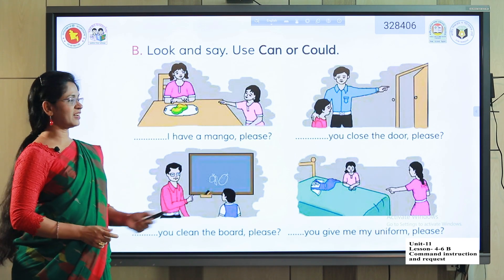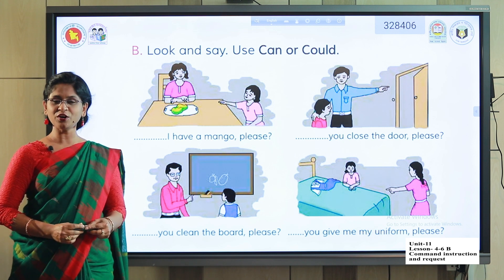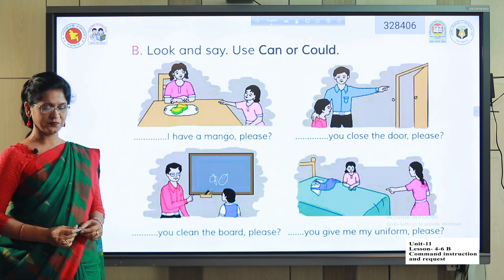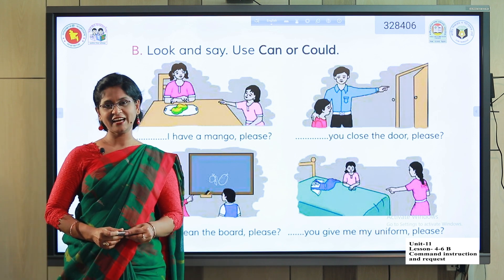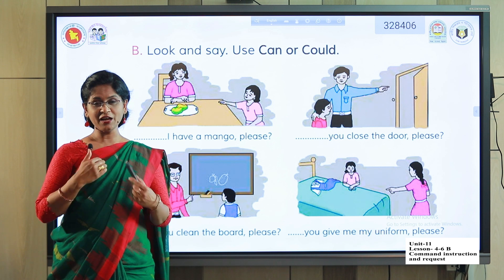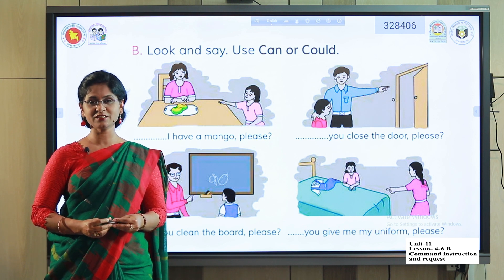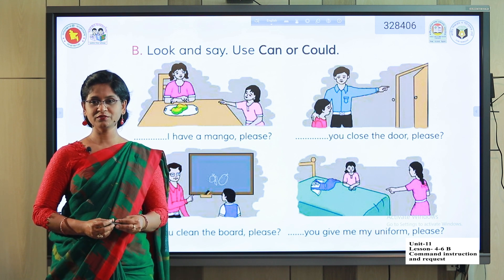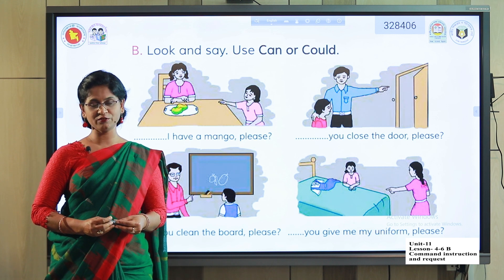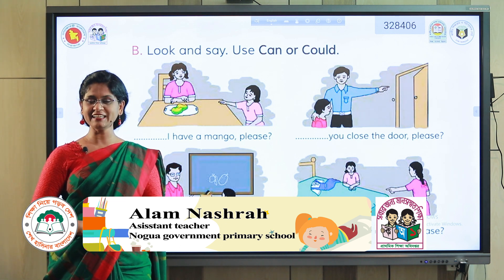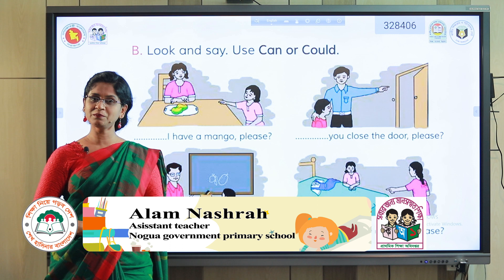Very good. Now you have to write these sentences on your notebook as homework. Now the review: if I want something, I have to use 'Could I have?' And if I want something to do — how to convert instruction into request — that is 'Could I?', and of course you have to use 'please.'